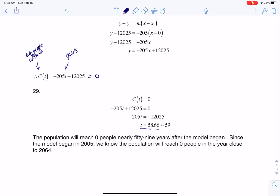So the population is going to reach 0 59 years after this model began. Now keep in mind my base year was 2005. So if my base year is 2005, what I need to do is take 2005 and add 59 to that, and I'm actually going to get the year 2064.